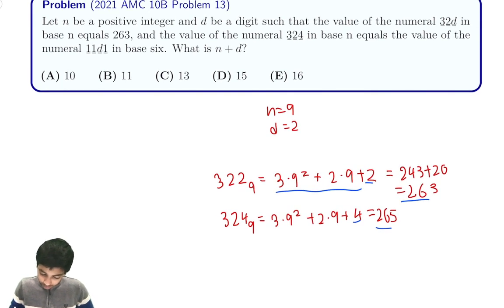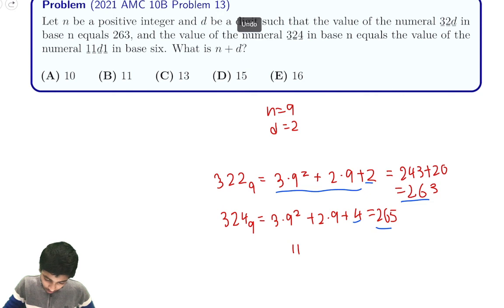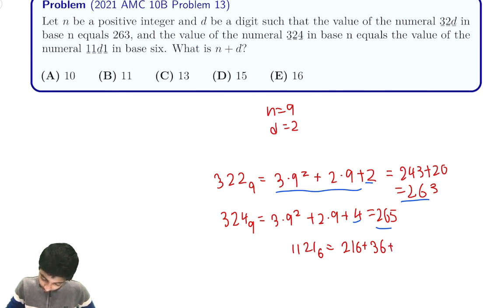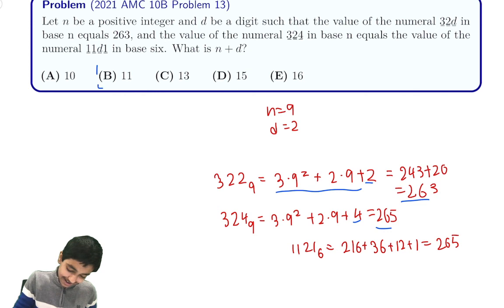So 265 — is this equal to 11d1 base 6, with d equals 2, making it 1121 base 6? Well, 1121 base 6 equals 216 plus 36 plus 12 plus 1, which equals 265. Yes, these are equal, which means our answer of 11 is correct.